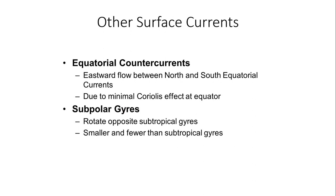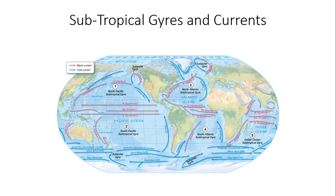Additionally, there are equatorial counter currents which show an eastward flow beneath the north and south equatorial currents, mainly due to the minimal Coriolis effect at the equator. From personal experience sailing in the vicinity of these counter currents, heading in the opposite direction of this current tends to slow things down — your speed of advance is much slower because the equatorial counter current is acting opposite to your motion.